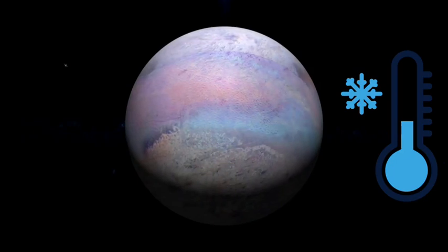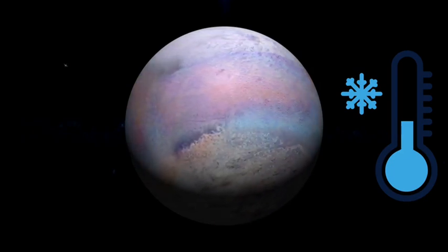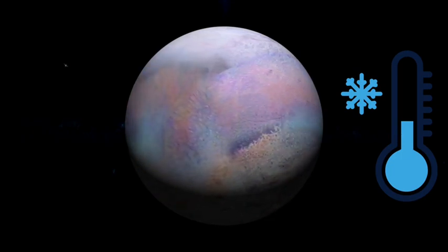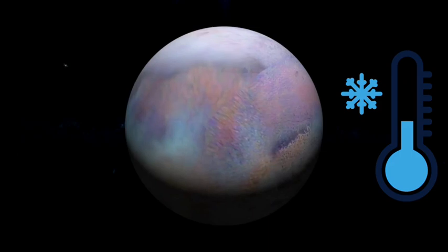The surface temperature of Triton reaches minus 235 degrees Celsius, and this feature makes it one of the coldest places in the solar system.